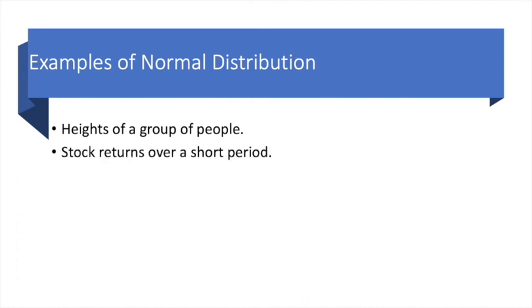So here are some examples of normal distribution in real life. These include heights of a group of people, stock returns over a short period of time, and average values of sample values. This last example, in fact, is such an important result that we shall cover it separately under the topic called central limit theorem. So if you do not fully understand what I mean here, do not worry, we'll devote considerable time on that.